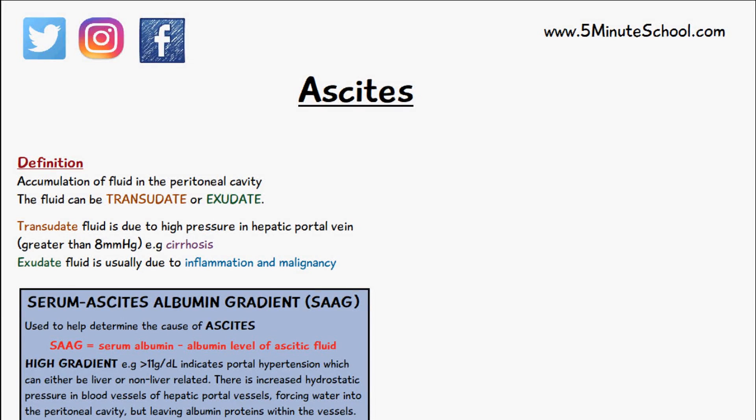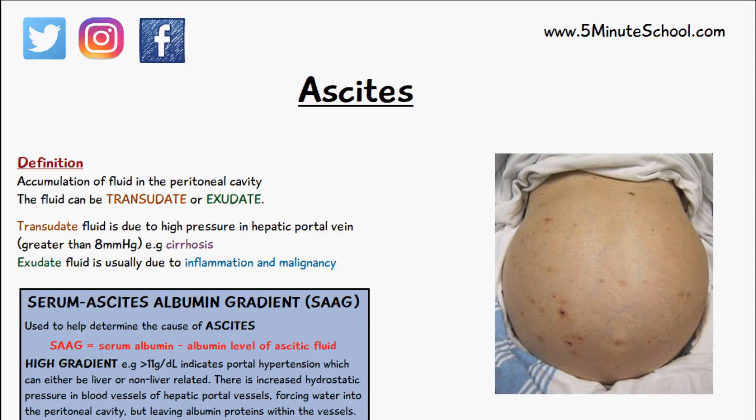In today's video we're going to be talking about ascites. The definition of ascites is the accumulation of fluid in the peritoneal or abdominal cavity.